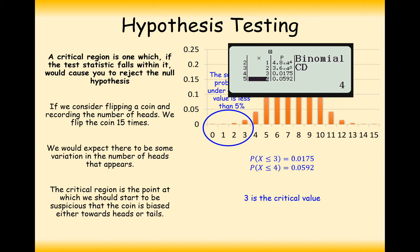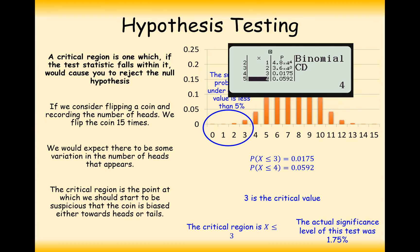So 3 here is the critical value, because this is the point at which that probability or fewer gives us less than 5%. The critical region is X is less than or equal to 3, and the actual significance level of this test is 1.75%. So we tested it to the 5% significance level, but our actual significance was 1.75%.